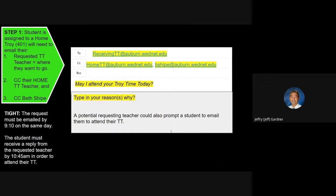Understand this: if you're a student that has a 402 intervention scheduled in, that prevails over everything. So just know that you can't request a different one, you've got to go to 402. Anyway, when you do create the email - and your teachers will help you with this - you put in the receiving teacher's email address on the 'to' line. On the CC line: your home Troy time teacher, and then Ms. Scheip. It's bsheipe@auburn.wednet.edu.